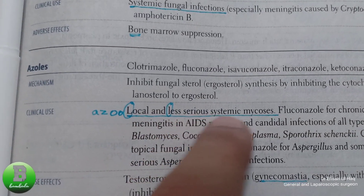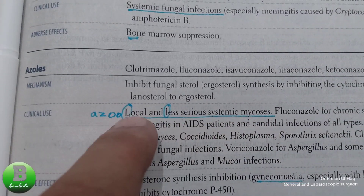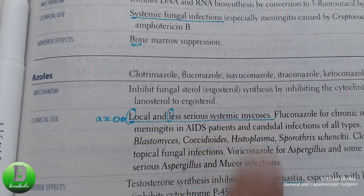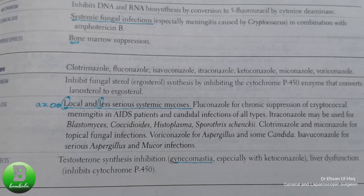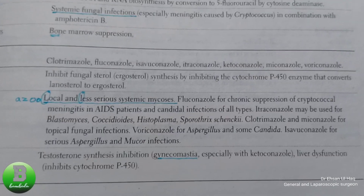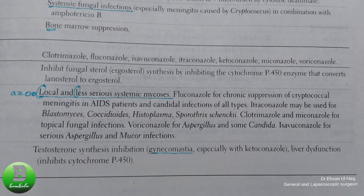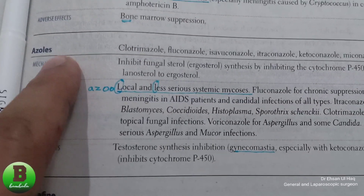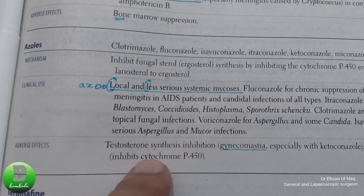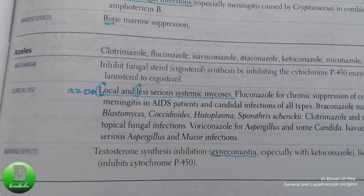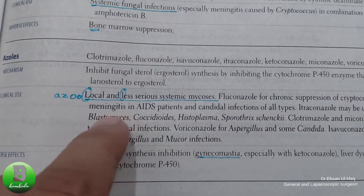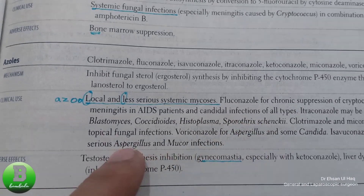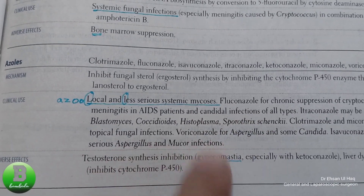Azoles are used for local and less serious systemic mycosis. Drugs in this class include fluconazole and ketoconazole, used for infections such as blastomycosis, coccidioidomycosis, histoplasmosis, sporotrichosis, aspergillus, and mucormycosis infections.